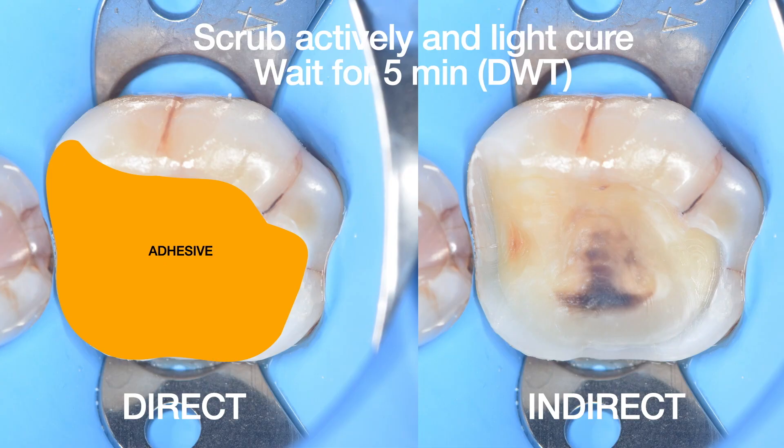As per the recommendation by Pascal Magne and Marco in their 2021 article, whatever bonding agent was applied on the dentine — to improve its bond strength and seal the dentine effectively — we apply a small coating of flowable composite on the dentine only. It is important to place this flowable coating only on the dentine, not on the enamel. Once completed, I move on to composite placement.